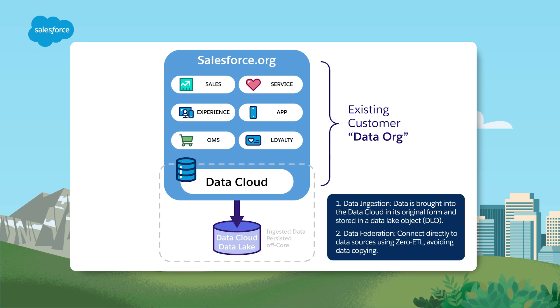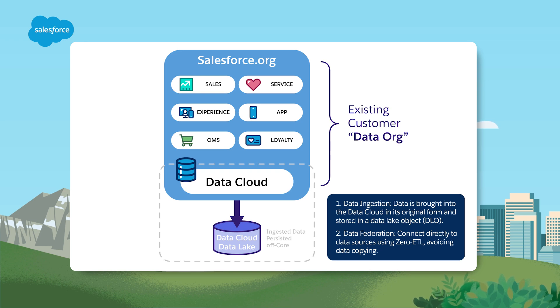The data lake will still separately persist and ingest data off-core — in other words, not in the Salesforce database. Data Cloud still requires API access to objects from within this existing org because it replicates data to the data lake. When you migrate org data or perhaps refactor your object model, you may need to re-implement or rework Data Cloud.